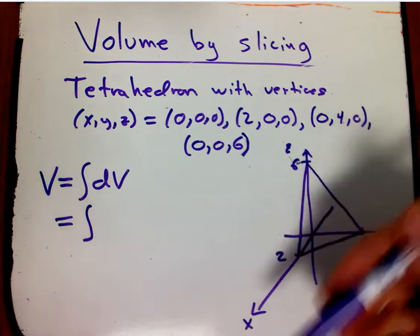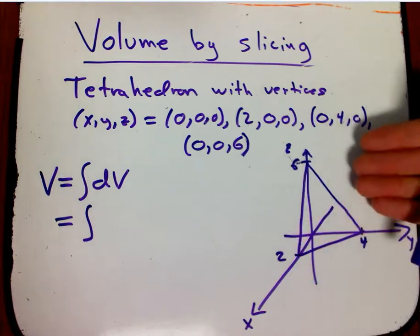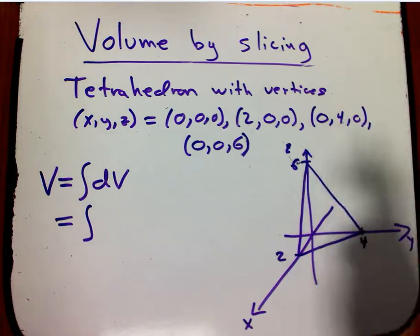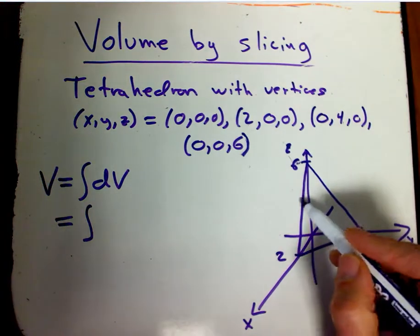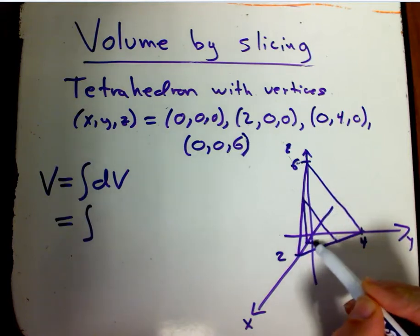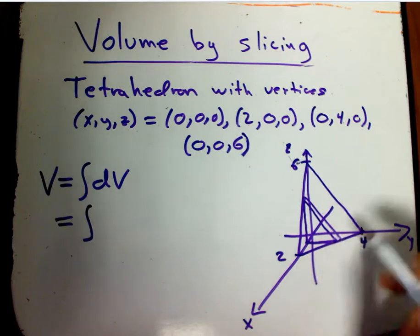You're going to have to have some variable that labels the slices. In this case we could use any one of the variables, but we'll use x because it's more standard. So we're going to slice it with slices parallel to the board from x equals 0, coming out toward us, until they hit x equals 2. Let me draw a representative slice.